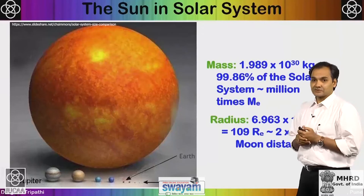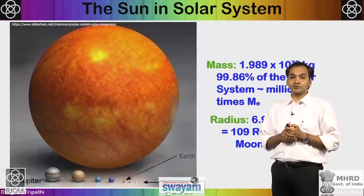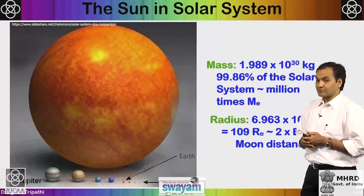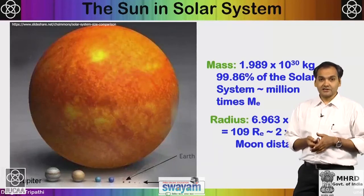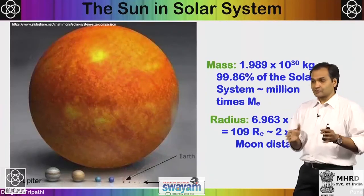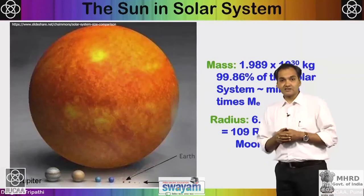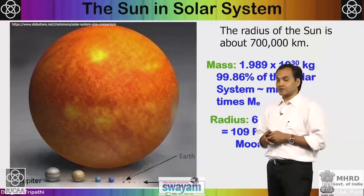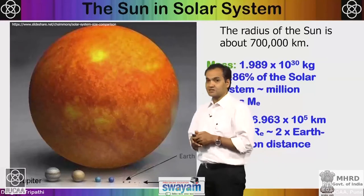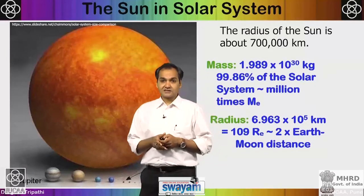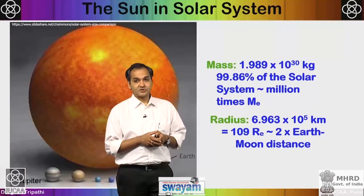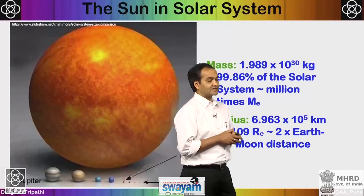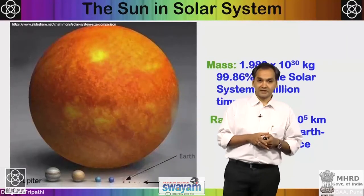In the solar system, the sun contains 99.8 percent of the total mass, which is about a million times the mass of the Earth. If you put all the planets and the sun on a scale, the Earth is just a tiny dot. The radius of the sun is about 700,000 kilometers, which is about 109 times the radius of the Earth and twice the distance between the moon and Earth.